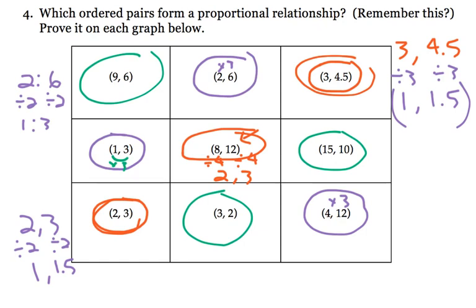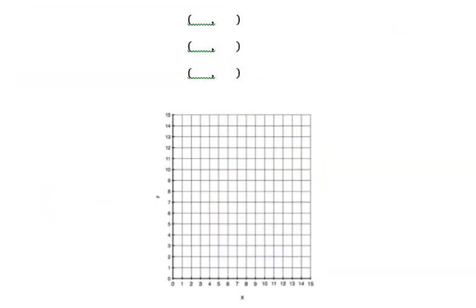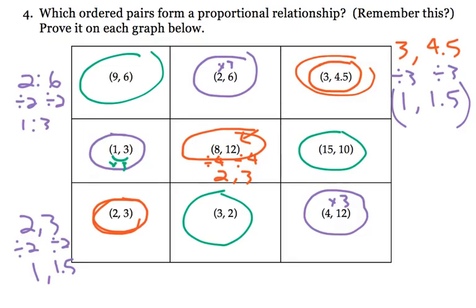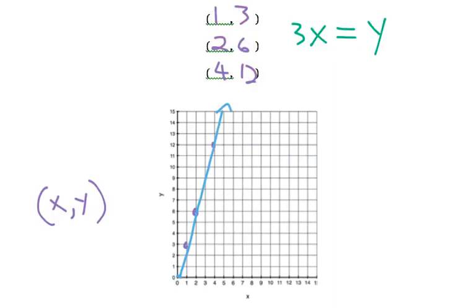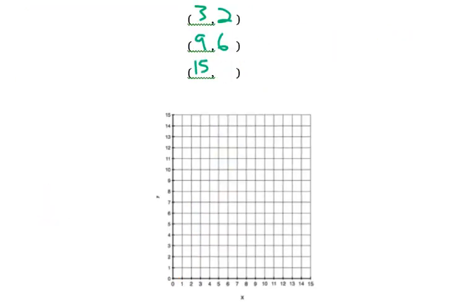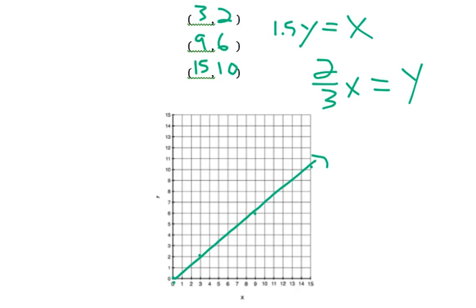Alright, and then, the last one is in green. We have 3 to 2, 9 to 6, and I believe, 15 and 10. So, we have 0, 0. It's always going to be part of a proportional relationship. We have 3, 2, 9, 6, and 15, 10. And, it looks like those, again, form a relationship. And, if you tried to write an equation here, it would actually be y times 1.5 equals x. And, you could also have done it this way. Which, I don't have time to explain right now. But, hopefully, makes sense.